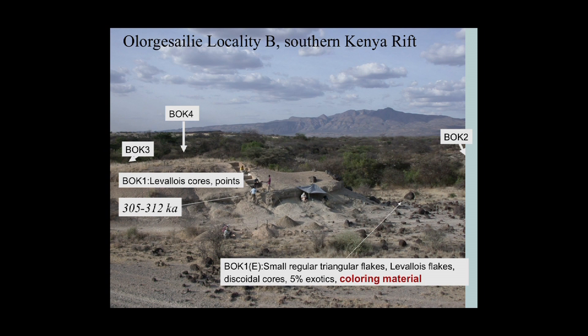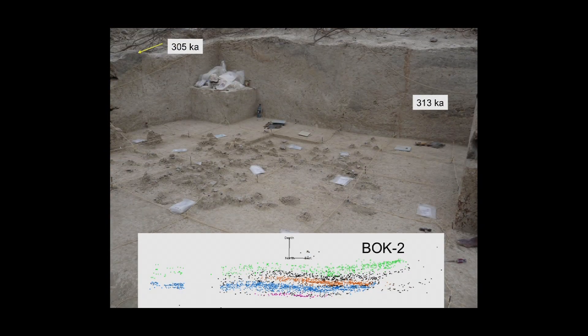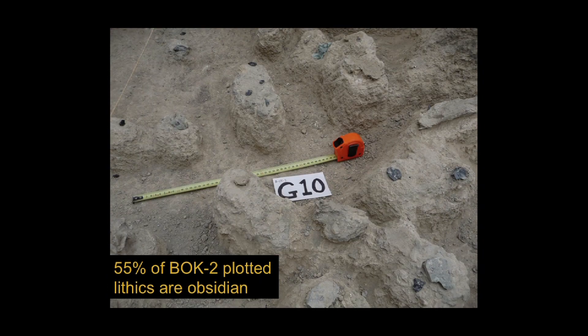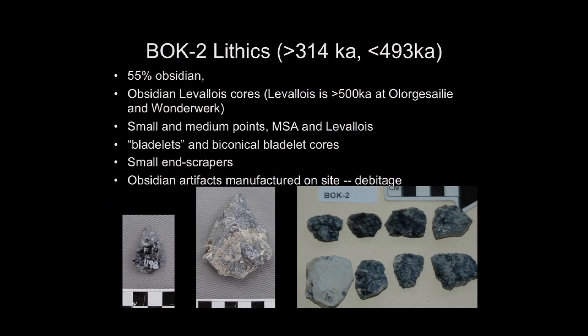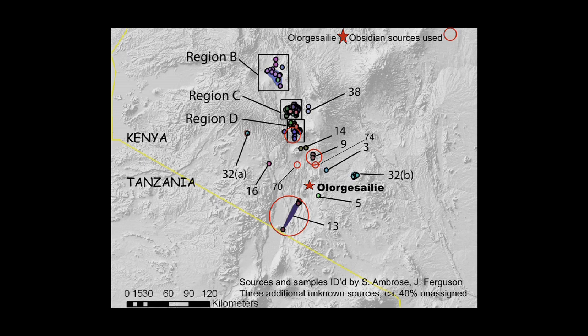At Elorga Sali, this is a locality we call B, with a tuff running through it dated to 305 to 312,000 years ago. Underneath this tuff, we have Lavallois flakes, coloring material, and various kinds of cores. At site BOK2, which is under two tufts dated 305 and 313,000 years ago, all these little black spots are obsidian — in fact, 55% of the plotted artifacts are obsidian. The lithics include shaped points, Lavallois points, and a series of small scrapers. We also have bladelets and biconical bladelet cores — an emphasis on a very small tool type.